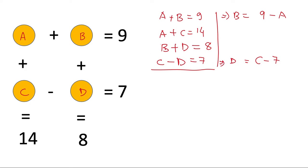So let's replace b and d. b plus d is 8, and b is 9 minus a. So we write 9 minus a plus d, and d is c minus 7, equals 8. So we get minus a plus c, and 9 minus 7 is 2. We send it to the other side so it becomes 6.